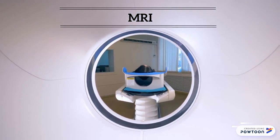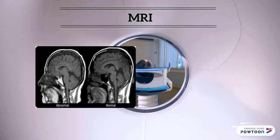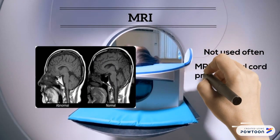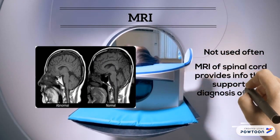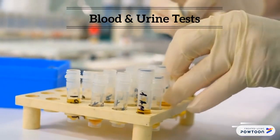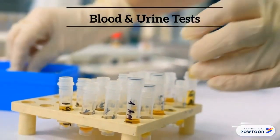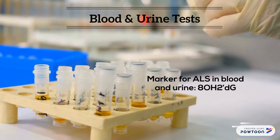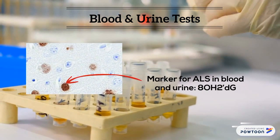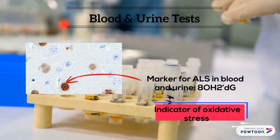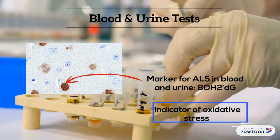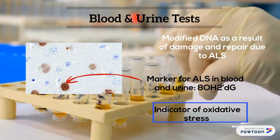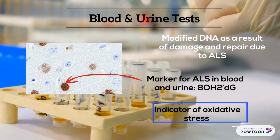The magnetic resonance imaging, also known as the MRI test, uses various radio waves and magnetic fields to produce images of the spinal cord and the brain. While not used as frequently, in rare cases MRIs of the spinal cord may provide enough information to support the diagnosis of ALS. Doctors may also request blood and urine tests. Analyzing these samples allows them to rule out other practical causes of symptoms and signs. Notably, there is a special marker in blood and urine samples called AOH2DG, which is an indicator of oxidative stress. This marker is a modified version of DNA that forms as a result of DNA consistently going through damage and repair due to ALS, and those with ALS will see increased levels of this marker.